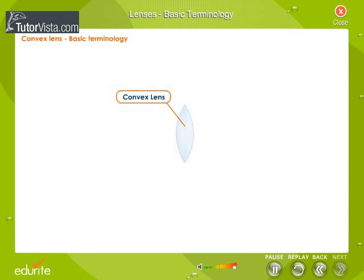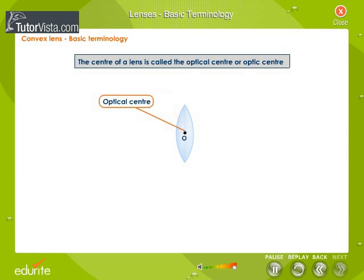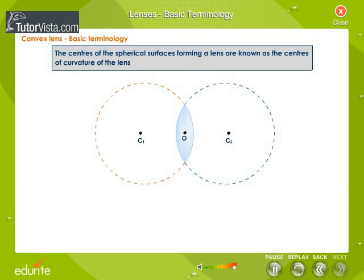Convex Lens Basic Terminology. The centre of a lens is called the optical centre or optic centre. The centres of the spherical surfaces forming a lens are known as the centres of curvature of the lens.